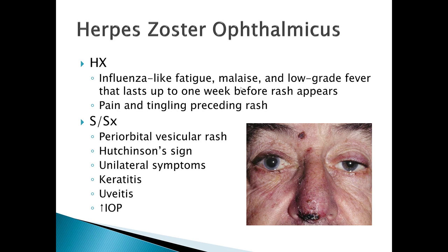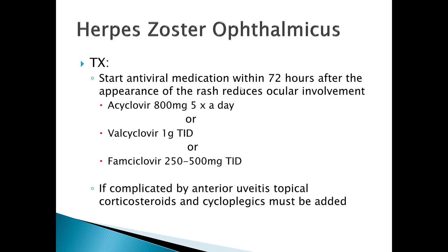Symptoms are usually unilateral because herpes zoster affects dermatomes. You can have keratitis, uveitis, and increased intraocular pressure. Looking at the picture, you can see the patient's right eye is affected and there is a difference in the pupils. Hutchinson sign — infection affecting the tip of the nose — is a key clue on standardized tests indicating herpes zoster with eye involvement. Treatment: start antivirals within 72 hours after the rash appears to reduce ocular involvement. Options include acyclovir, valacyclovir, or famciclovir. If complicated by anterior uveitis, add topical steroids or cycloplegics.